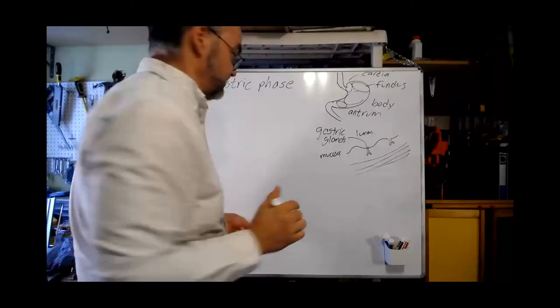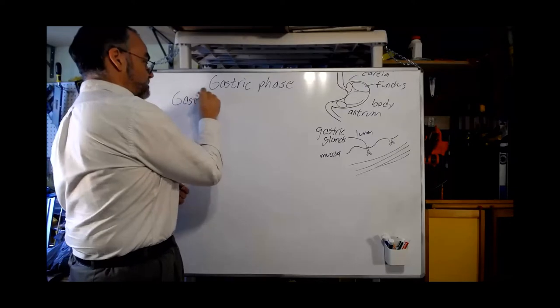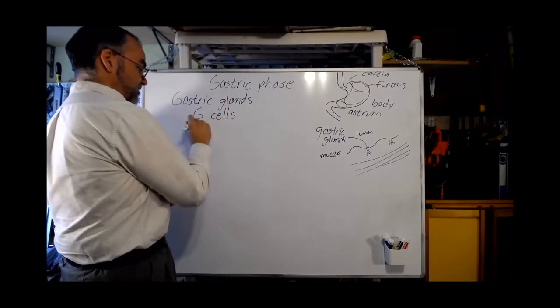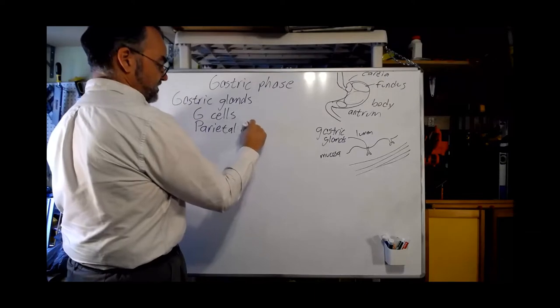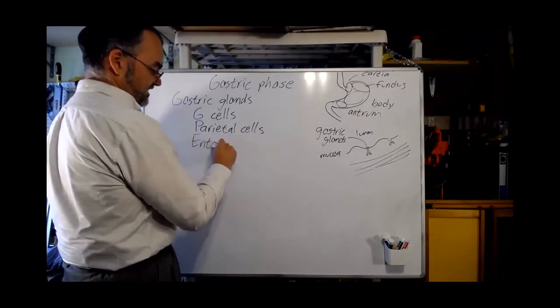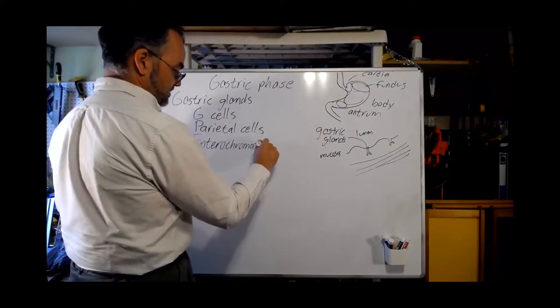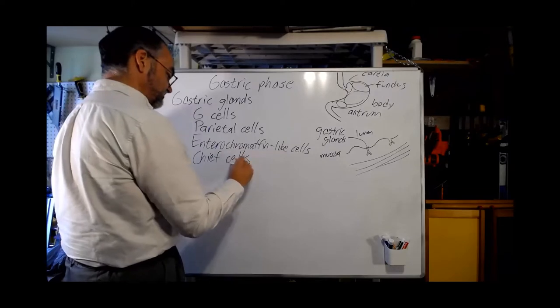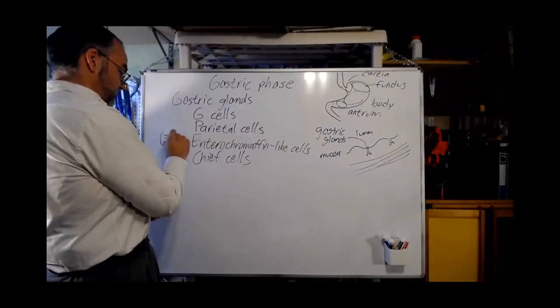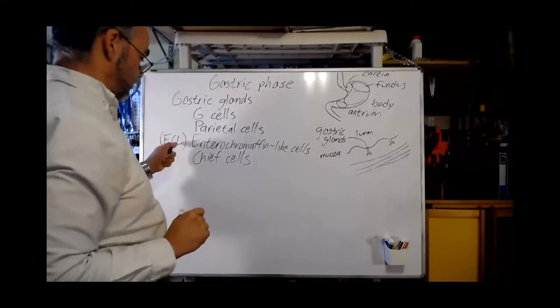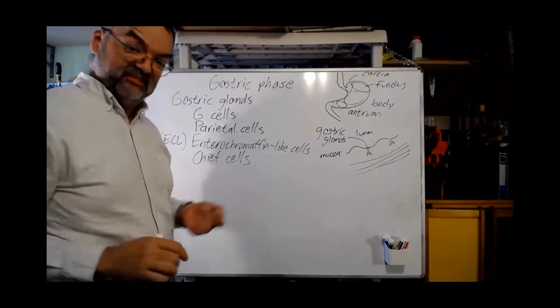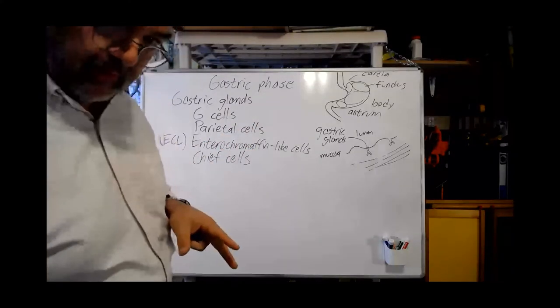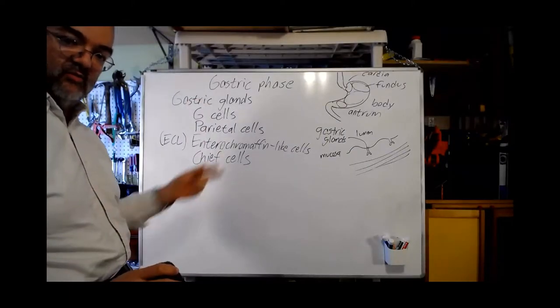It's the cells down in those gastric glands that are going to secrete the things that make the stomach interesting. We're going to talk about four different kinds of cells that are down in the gastric glands. In here we have the G cells, the parietal cells, the ECL cells, and the chief cells. These cells are all doing stuff that interacts with each other, so there's a fairly complicated interaction going on here.